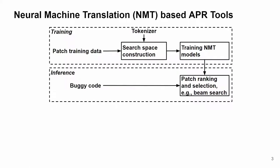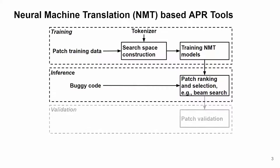BeamSearch is a greedy search algorithm which uses breadth-first-search to build the search tree, and at every step it selects the most promising nodes to expand. By using BeamSearch, APR tools can generate a list of most promising candidate patches efficiently. Finally, the candidate patches are validated against the developer-written test suites, until they find and output the correct patch that makes the patched program pass all the test suites.